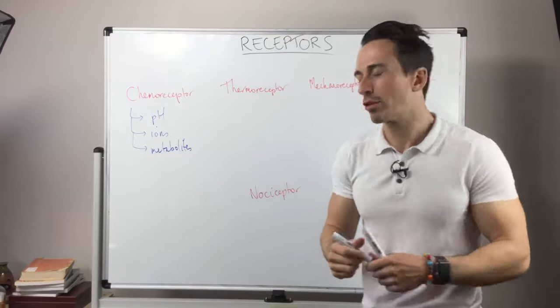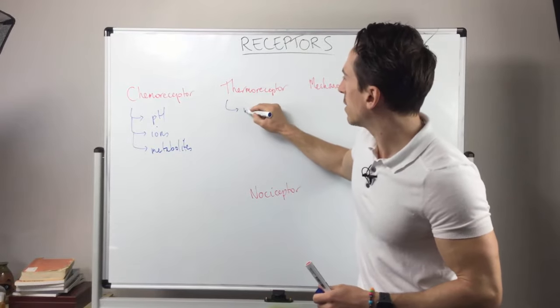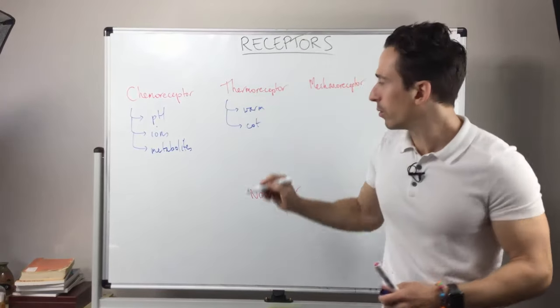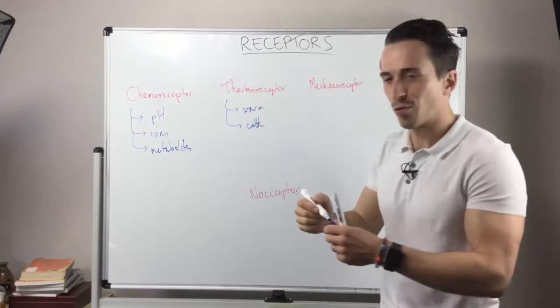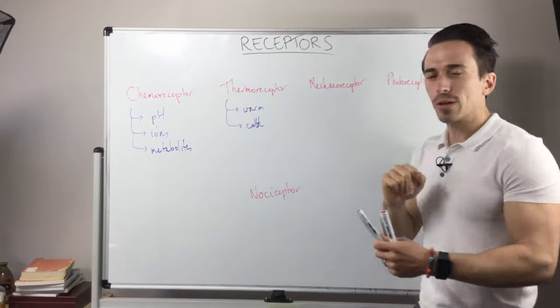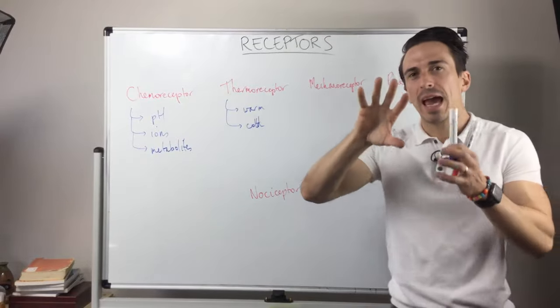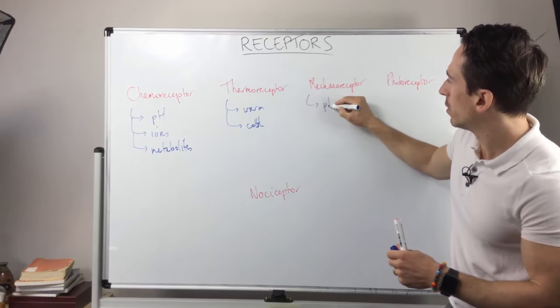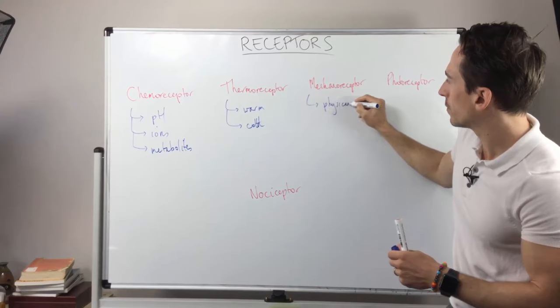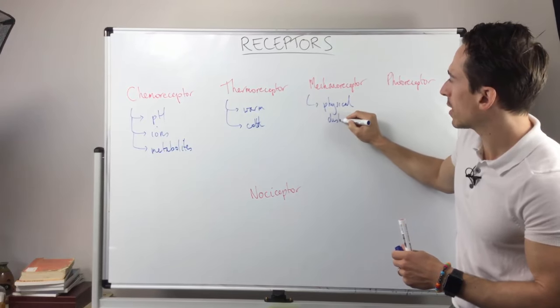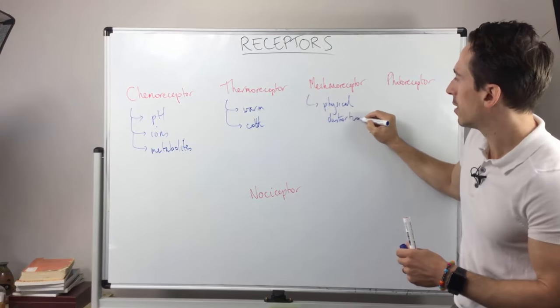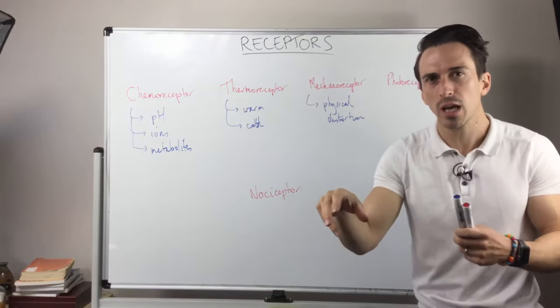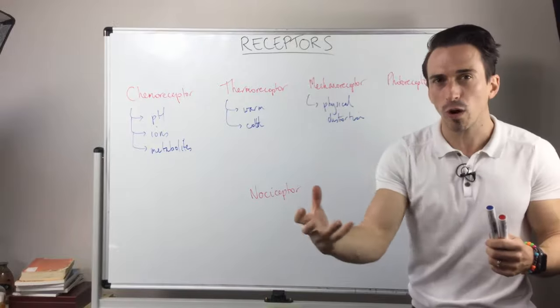Thermoreceptors pick up temperature changes and they basically pick up whether something is warm or hot or cold. Mechanoreceptors pick up any sort of physical distortion. Physical distortion basically refers to touch. So it could be pressure, vibration, fine touch, or gross touch.